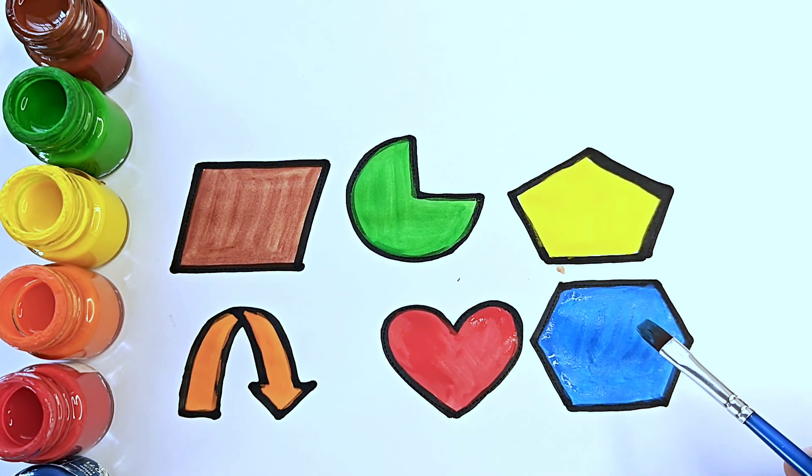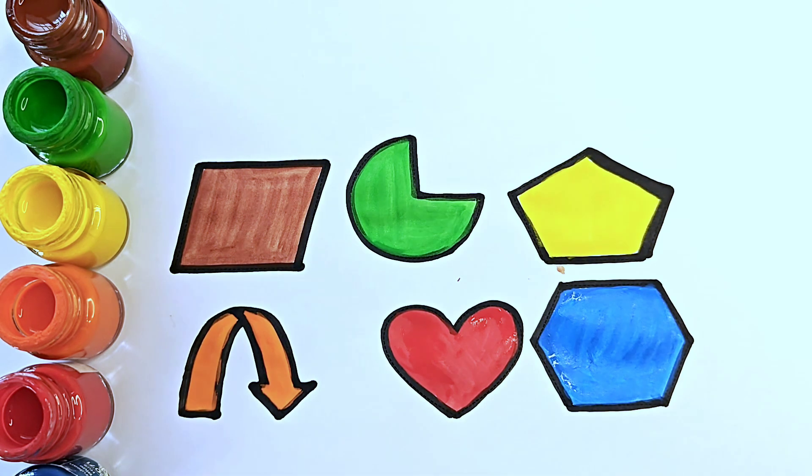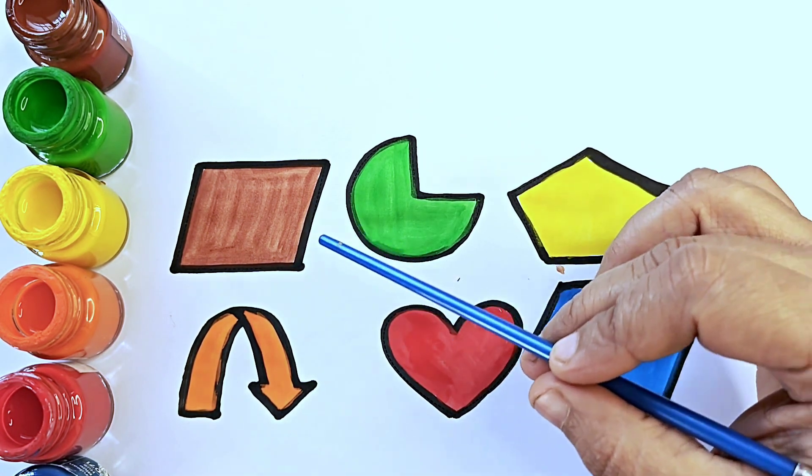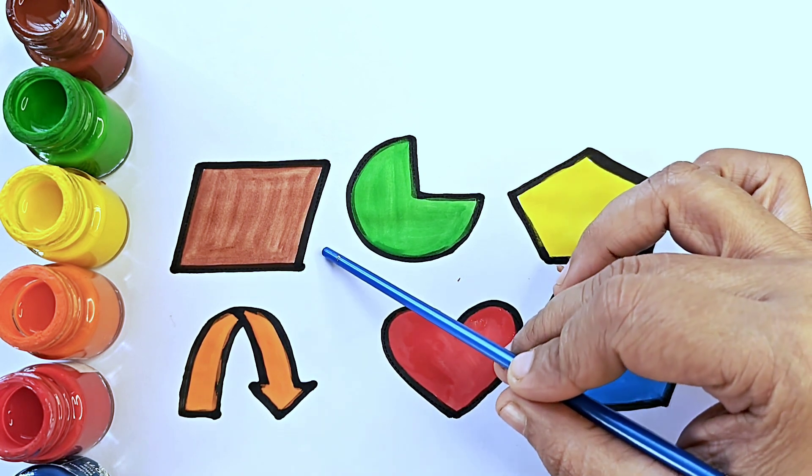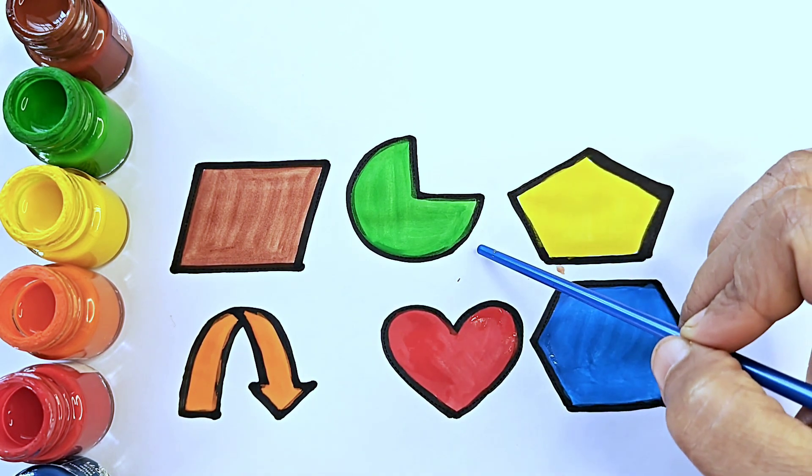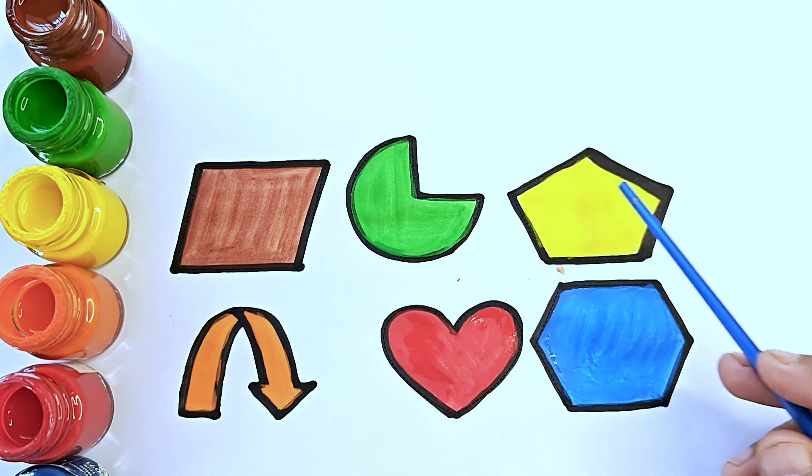Hexagon. Hexagon. Hexagon. Parallelogram, it has four sides. Pi, also known as partial circle. Pentagon, it has five sides.